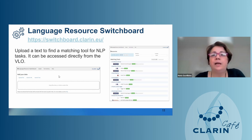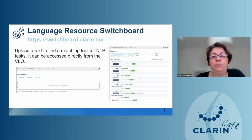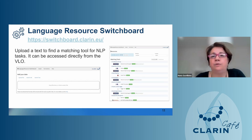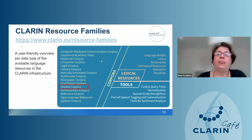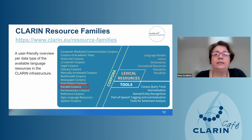For tools, you can access them through the Language Resource Switchboard. You upload your data and the system, through the metadata description, identifies which tools can process it. For example, if you upload a Greek dataset, it will not propose tools that do not support Greek. You get matching tools through the Switchboard.